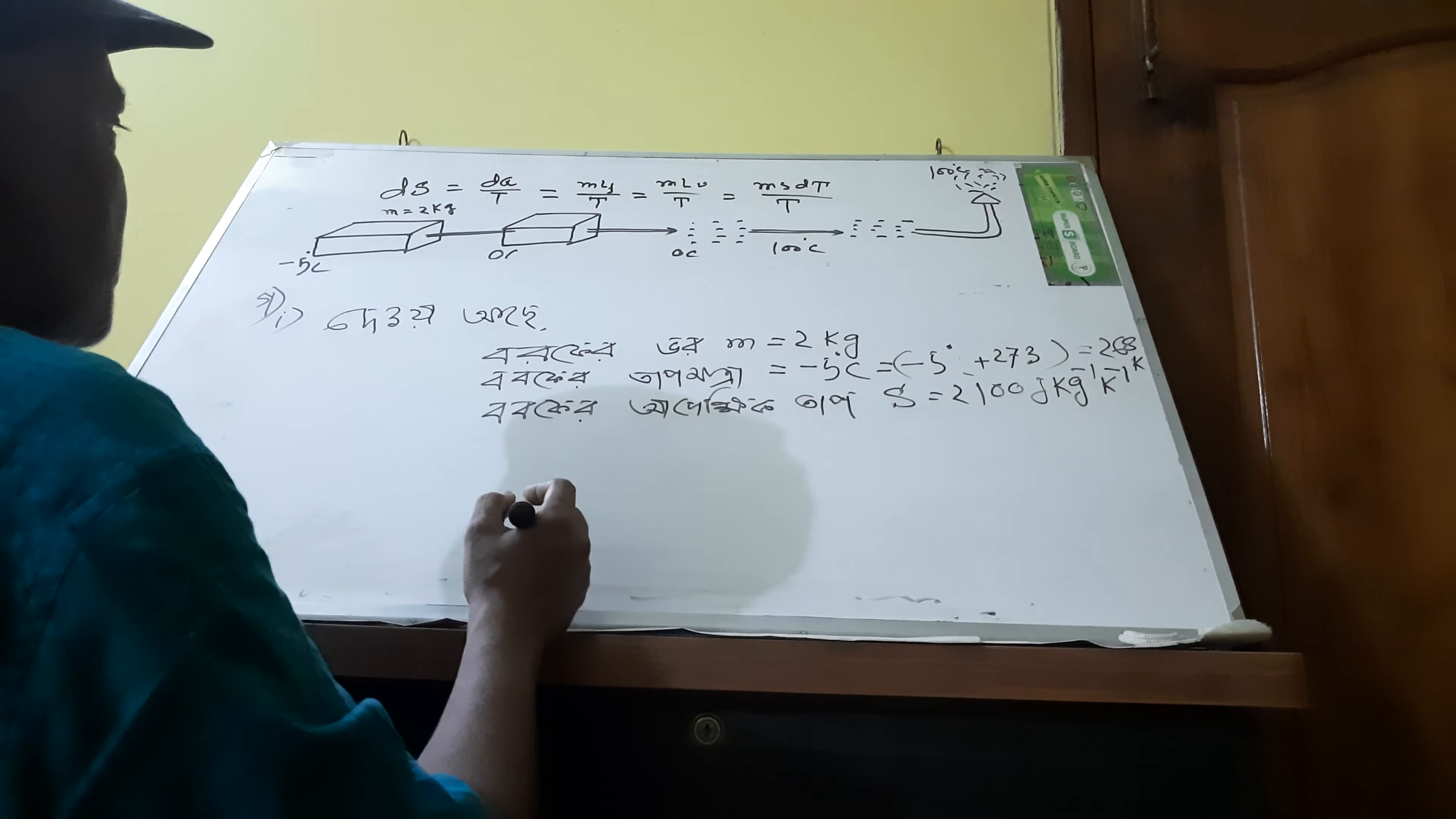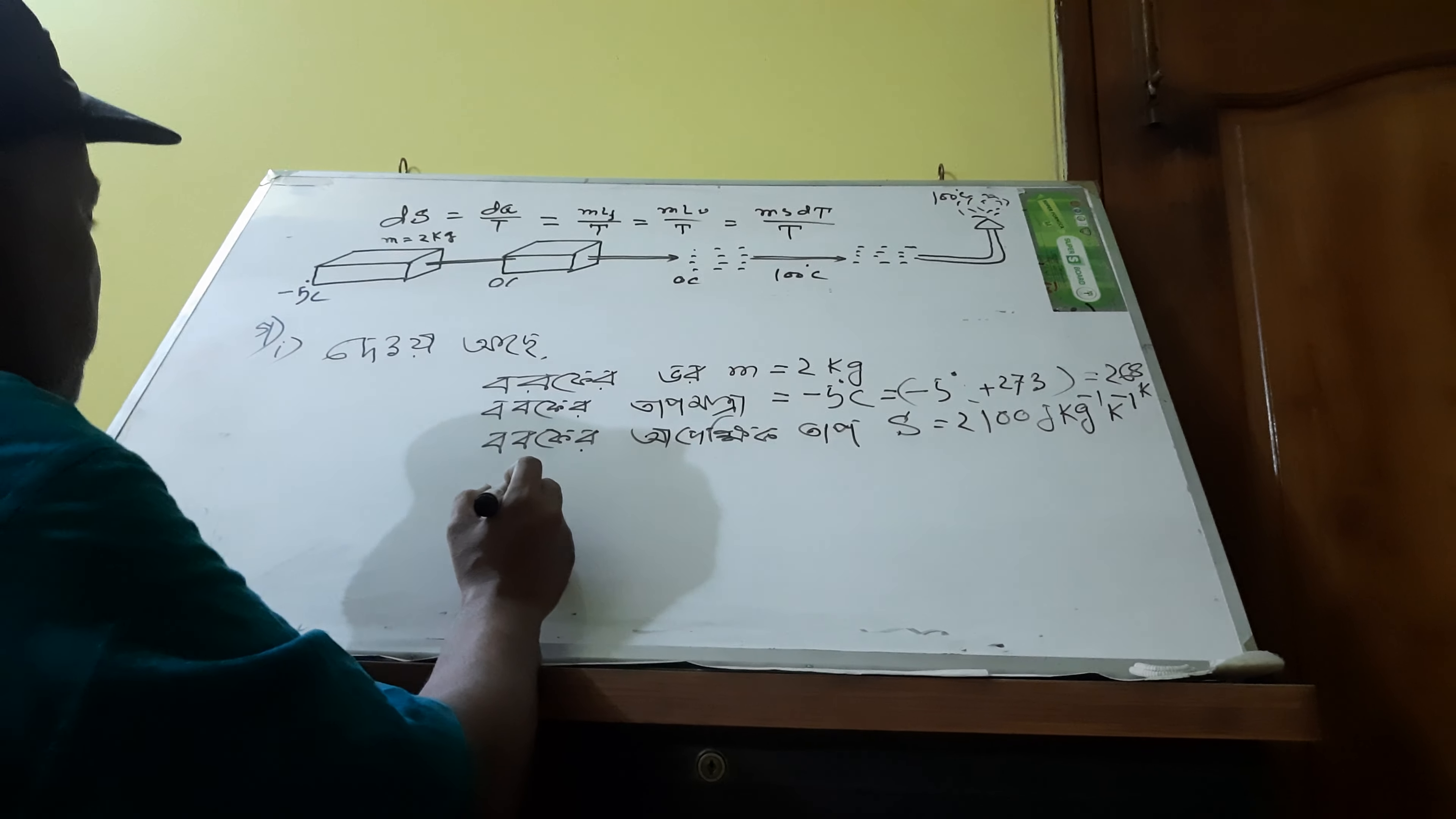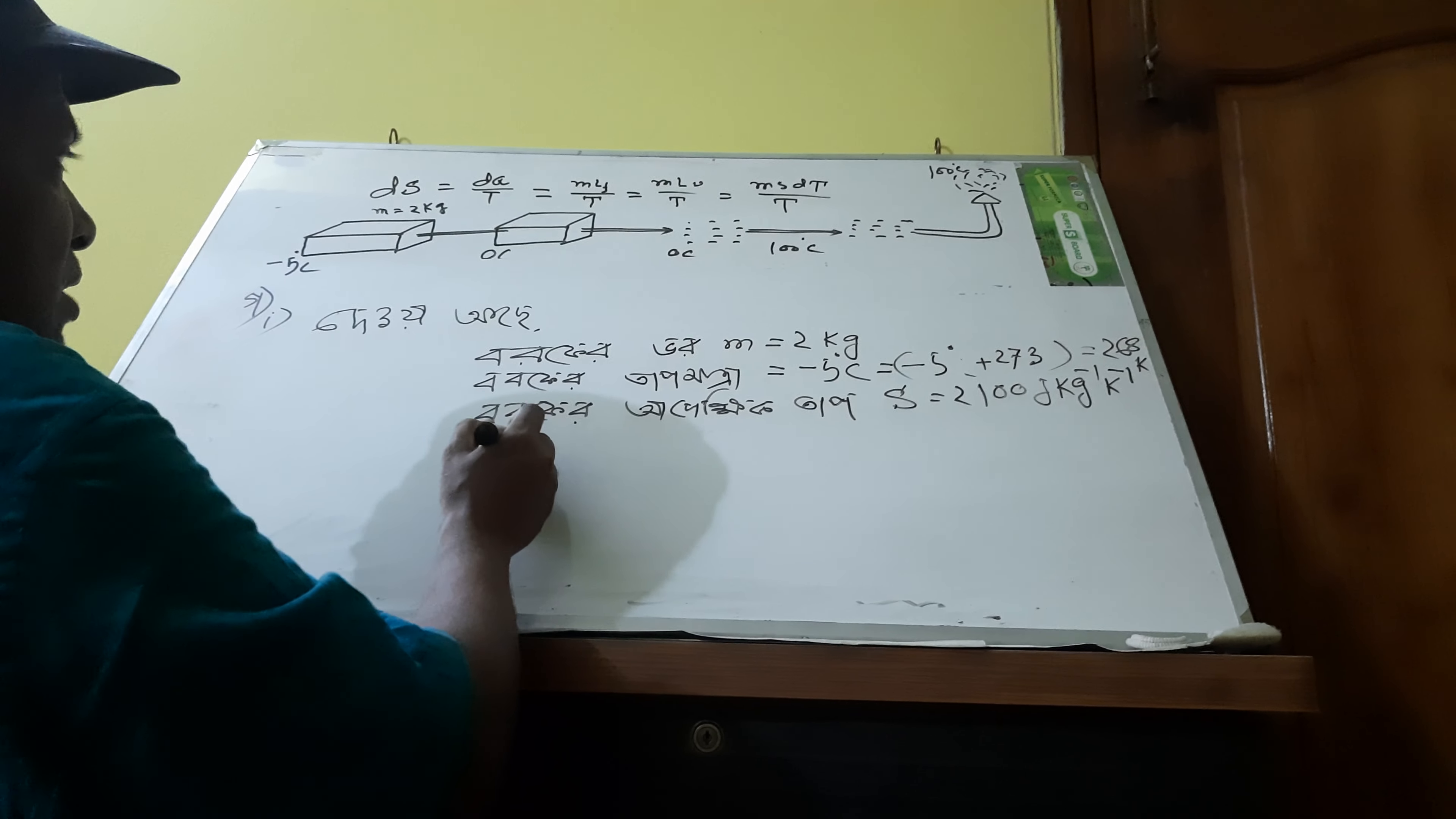The formula is minus 5 degree centigrade or 0 degree centigrade. In this case, we are going to use this formula.